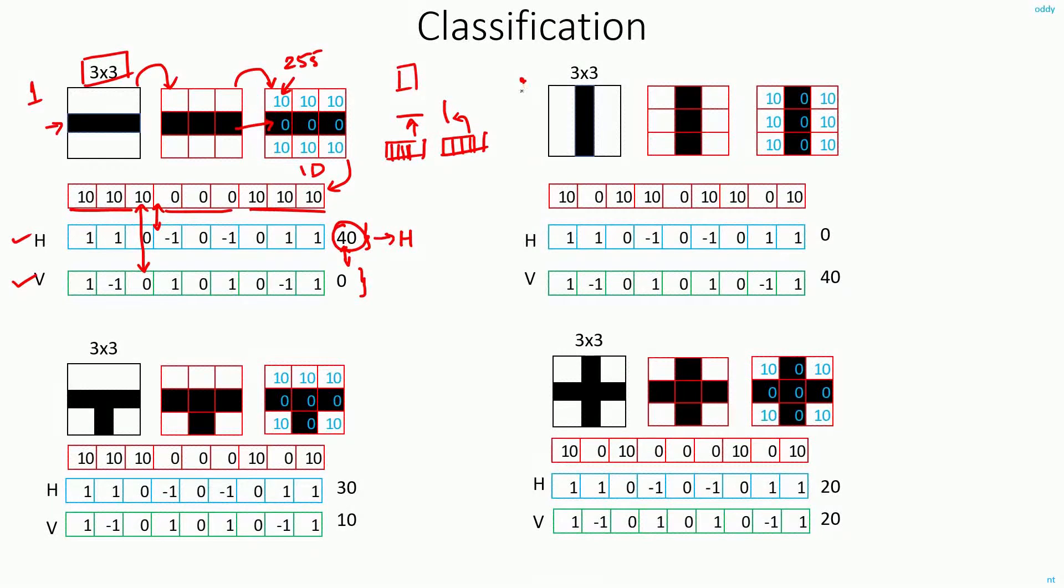Now let me take another example, another image, which is again a 3x3 patch, but this time it has a vertical edge right in between. And I'll do the same computation here. This is how I'll get the pixel intensity values. I'll stretch it out and do the computations. And this time, this is the higher value of these two outputs, and so I conclude that this image has a vertical edge.